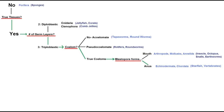For example, let's look at invertebrates and the diagnostic characteristic of true tissues. The only animals which lack them are sponges; all others have them. Next, we can look at the number of germ layers an organism has. Only cnidarians and ctenophores, which are basically jellyfish, have two, and all others have three.